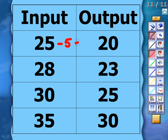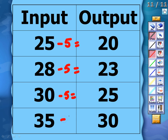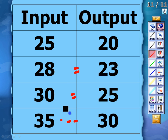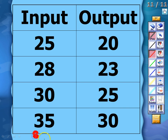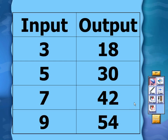Verifying subtract 5: 25 minus 5 equals 20, 28 minus 5 equals 23 — correct. 30 minus 5 equals 25 — going through every input/output pair. And 35 minus 5 gives 30. I can see that subtracting 5 is the rule for every single input/output pair. The rule for this table is subtract 5.